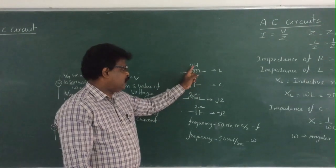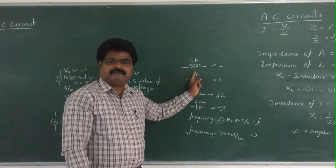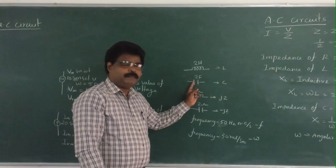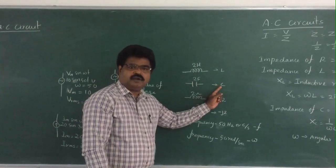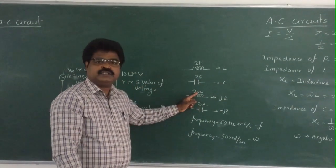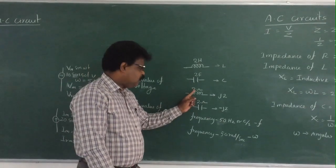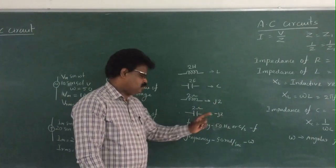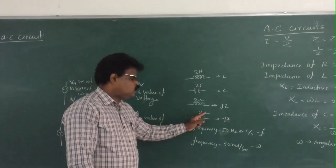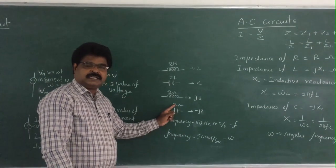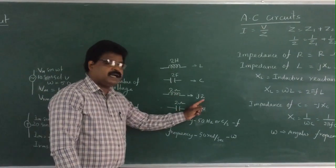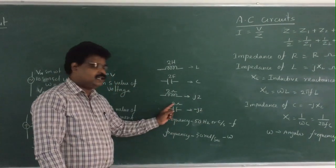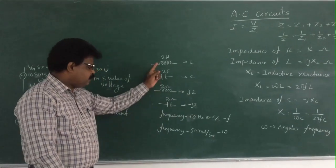For example, 2H — that is the value of an inductor, not inductive reactance. 2F — that is the value of a capacitor, not capacitive reactance. But 2Ω — that is the value of reactance itself. When writing the impedance of an inductor of 2Ω, you write j·2. For a capacitor reactance of 2Ω, you write −j·2. This distinction is very important.